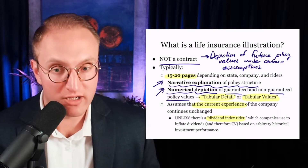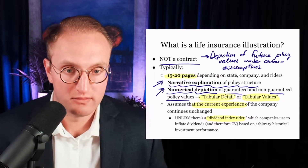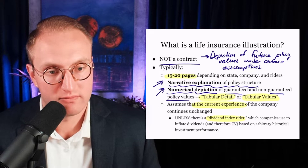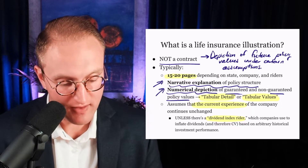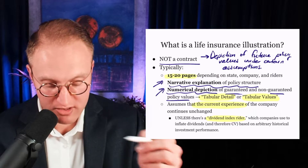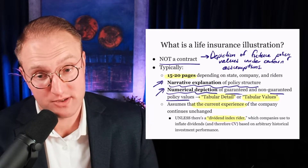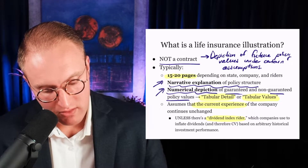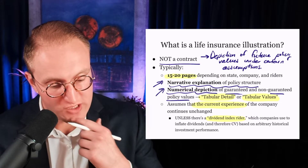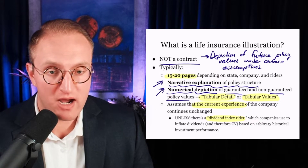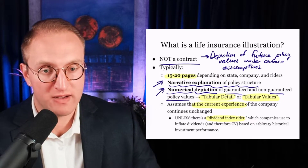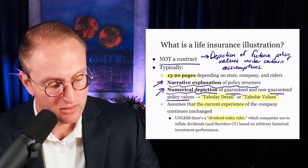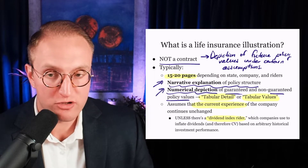Life insurance companies use a set of options contracts in order to determine how much they'll credit — and by the way, those options cost money. So a whole life insurance illustration is a depiction of future policy values. It's not a contract. It's half narrative explanation, generally, and half numerical depiction, based upon the current experience of the company and your assumed premium payments.